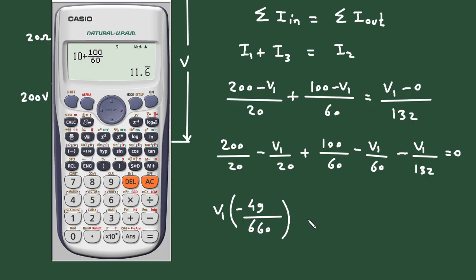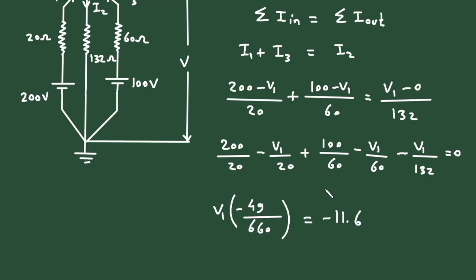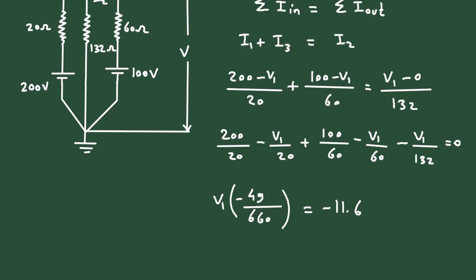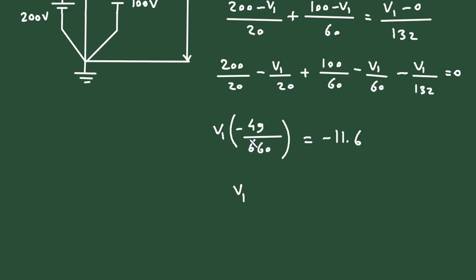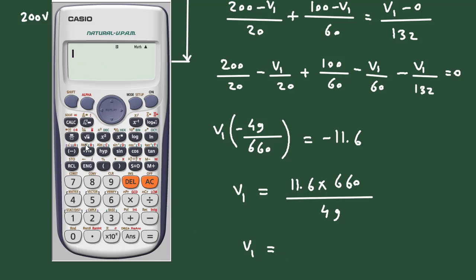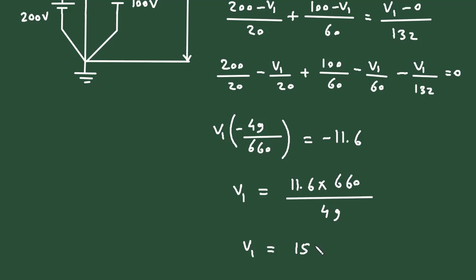Taking the constant to the right side gives −11.6. The two negatives cancel, so V1 = 11.6 × 660 / 49. Therefore, V1 = 156.24 volts.